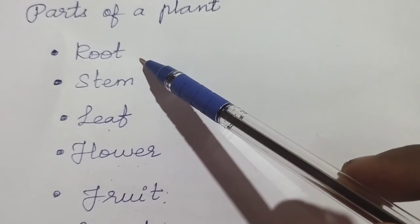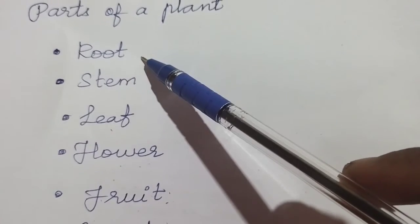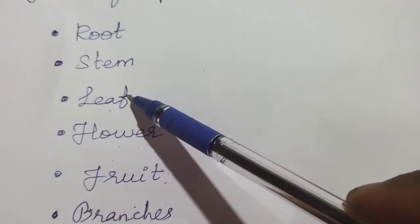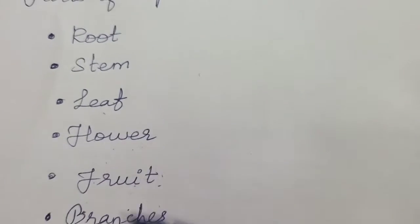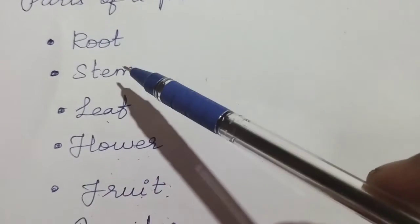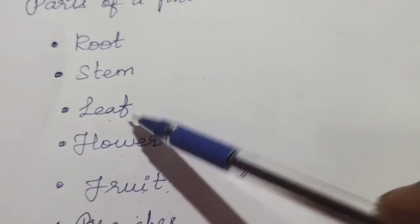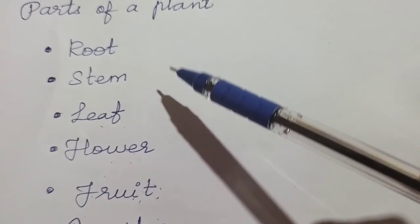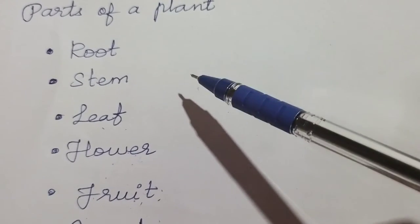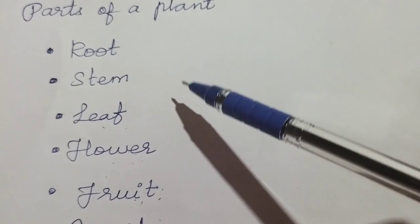Students, what are the important parts present in the plants? Root, stem, leaf, flower, fruit and branches. Students, once again read louder. Root, stem, leaf, flower, fruit and branches. So these are the important parts of a plant that help the plants to grow well. Thank you students.